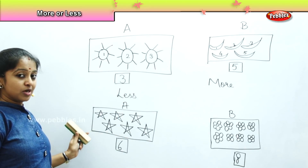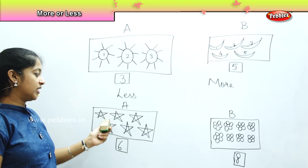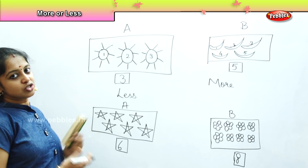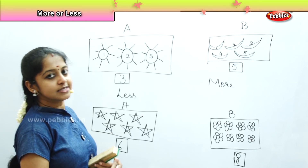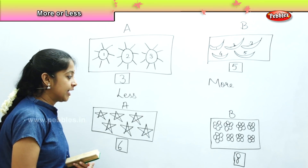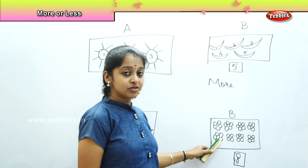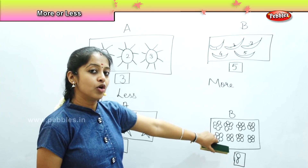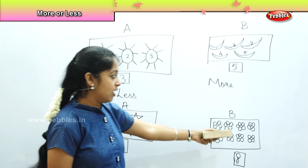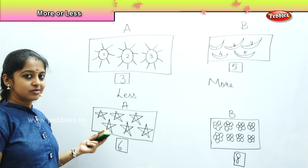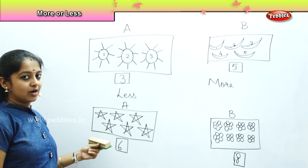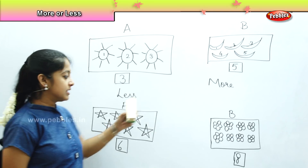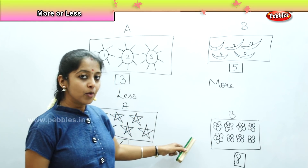Again, you see which box has got more numbers, whether it is box A or box B. Box B has got more because the number of items are more — the number of flowers are more. Box A has got less items; there are only six stars. So box A is less and box B is more.